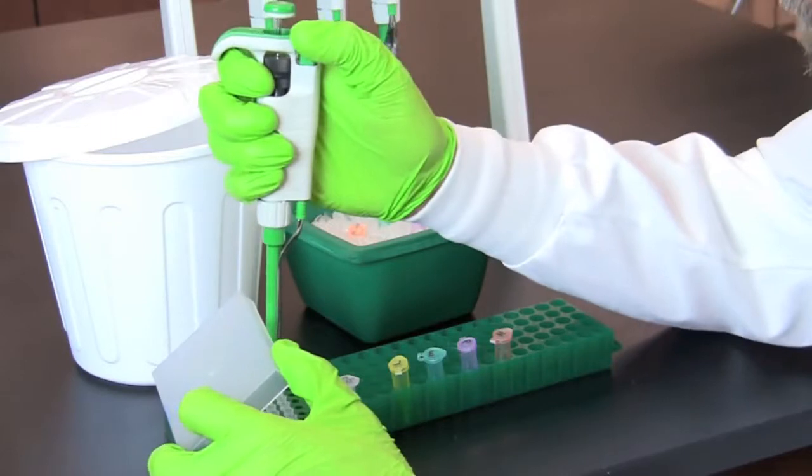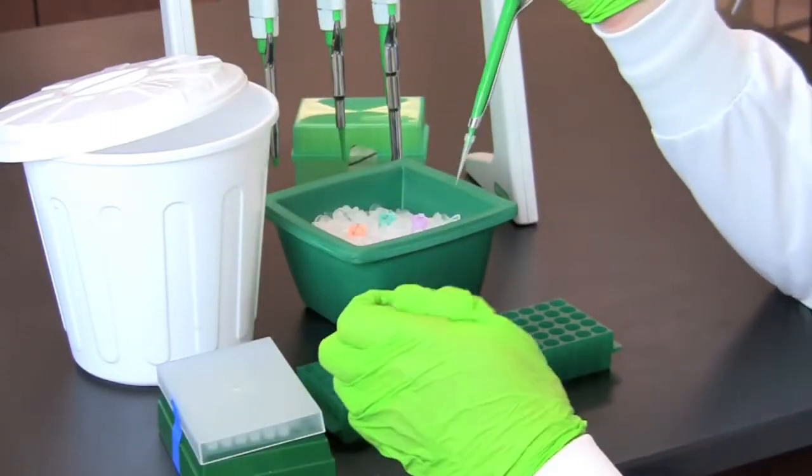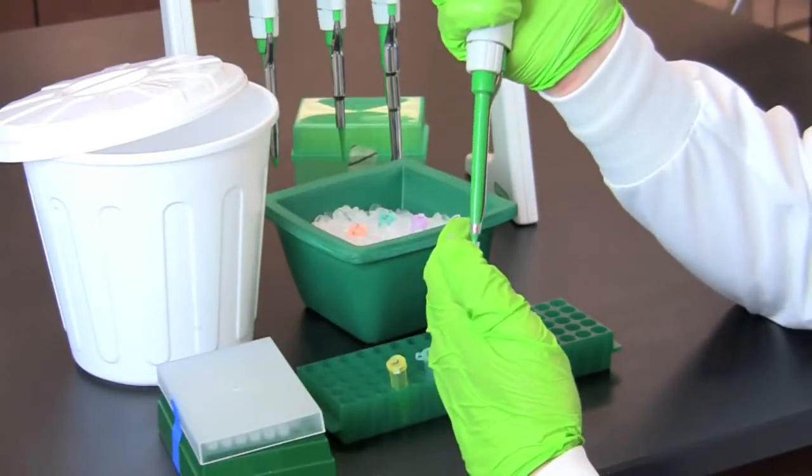Continue this procedure using the same volume of five microliters to transfer restriction buffer to the tubes labeled P and H.